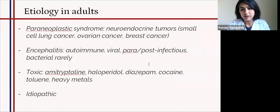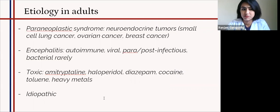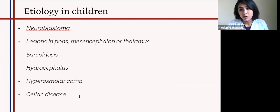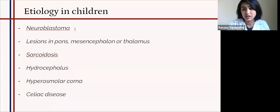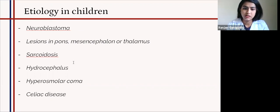The etiology in adults is usually paraneoplastic — typically neuroendocrine tumors. It could also be due to encephalitis, which is either autoimmune, viral, post-infectious, or due to exposure to toxins or drugs. If we cannot identify the cause, we call it idiopathic. In children, almost 50% of the time it is due to neuroblastoma — this is really important to note because if we see a child with opsoclonus-myoclonus, there must be thorough investigation to exclude neuroblastoma. The other 50% is due to less frequent causes such as lesions in the pons, mesencephalon or thalamus, sarcoidosis, hydrocephalus, hyperosmolar coma, or celiac disease.